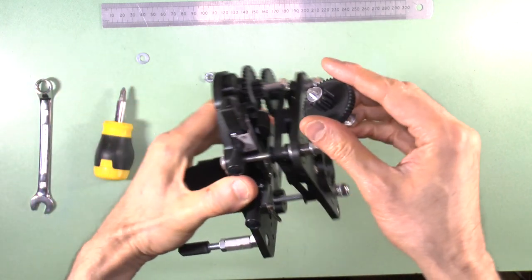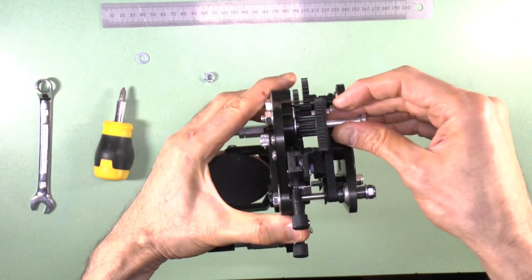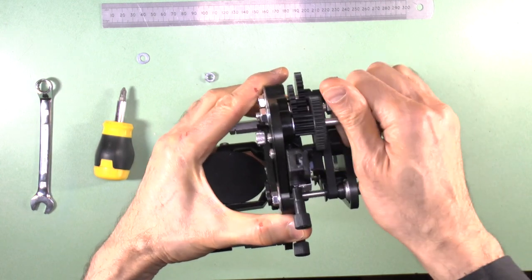You can now reinsert the fine gear with its washer and axle bolt, re-attach the rear leg and lower the stage back to a normal position.